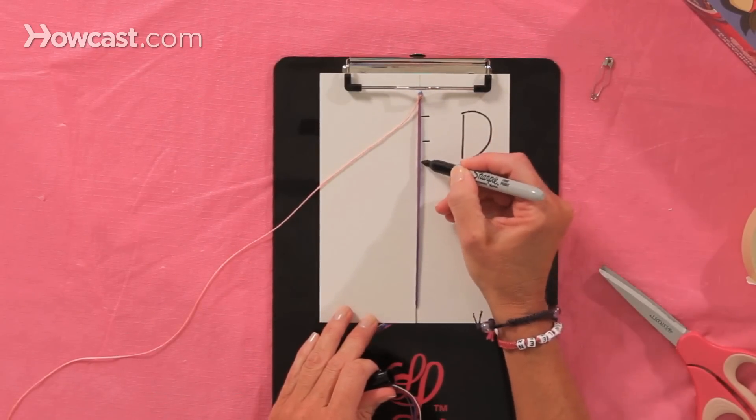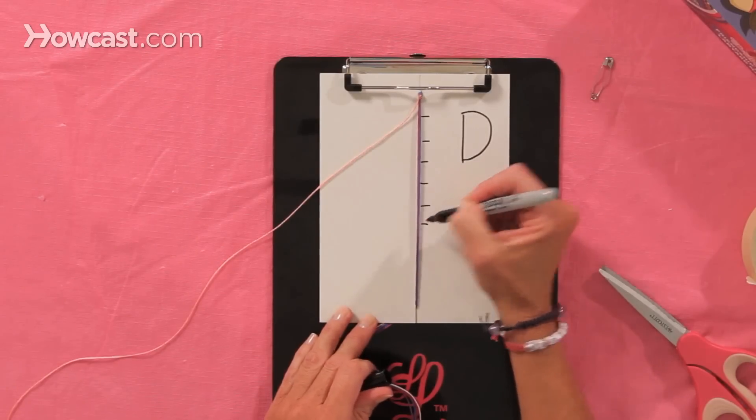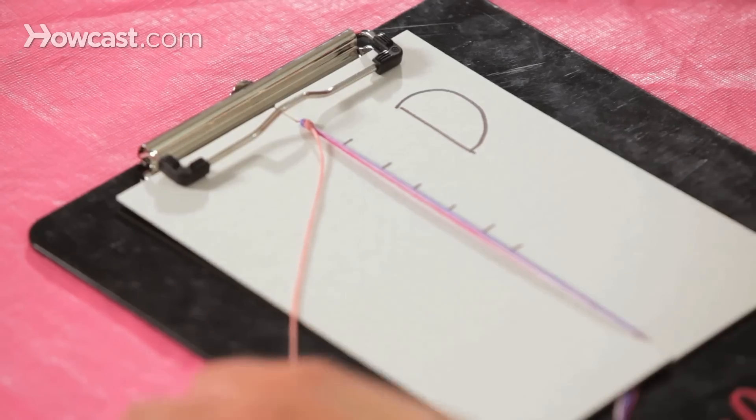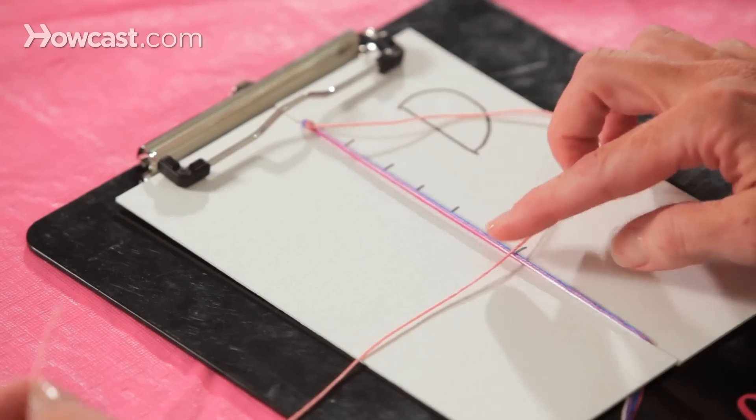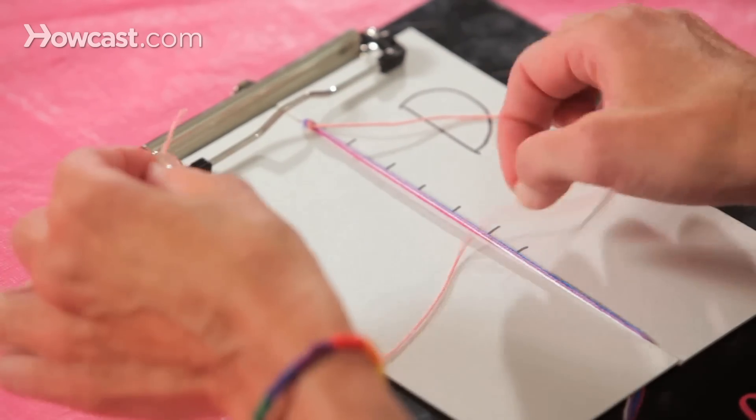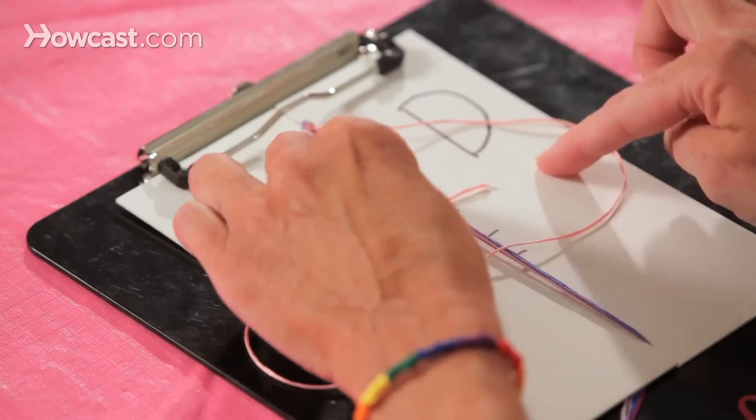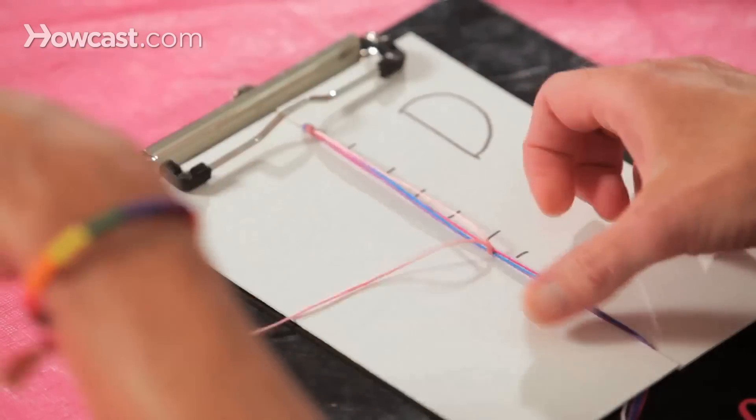And we're also going to change our colors as we go along. So we're starting with the pink, and we're making the D. You take the end of the string you're making the D with, under the center strings, into the loop of the pink D, and you pull it up.